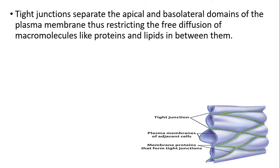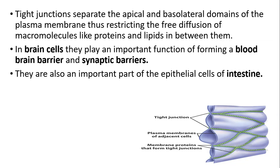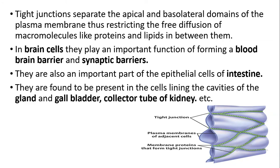Tight junctions completely separate both cells through the plasma membrane, so there is no free diffusion of proteins or lipids between the cells. Tight junctions are easily seen in brain cells — for example, the blood-brain barrier, where the brain is never in contact with blood because of the tight junction. Other examples include synaptic barriers, the cells of the intestine, the gallbladder, and the collecting tubule of the kidney.